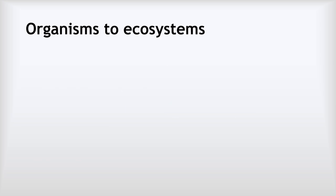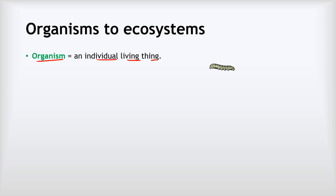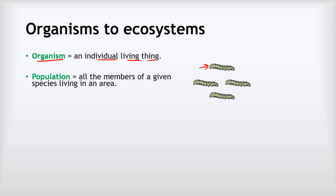We're going to start by getting some basic definitions in place. The first definition is the word organism. An organism is an individual living thing, for example a caterpillar. You rarely get one organism on its own, so instead we talk about a population. A population is all of the members of a given species living in an area. In this example, my population of caterpillars is four because there are four caterpillars.